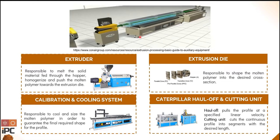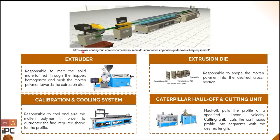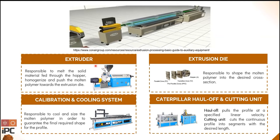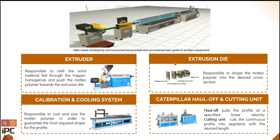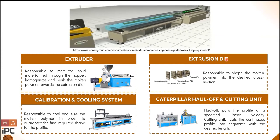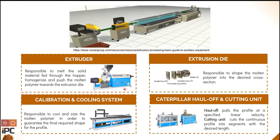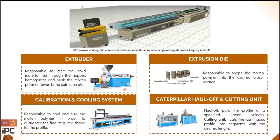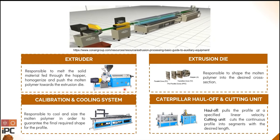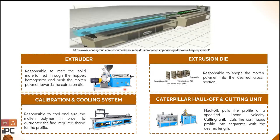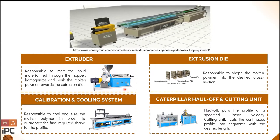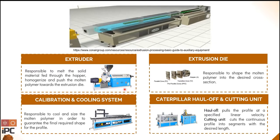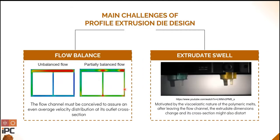A typical profile extrusion line consists of: an extruder, which is responsible for melting the solid material, homogenizing, and pushing the molten polymer towards the extrusion die; an extrusion die, which shapes the molten polymer into the desired cross-section; a calibration and cooling system, which cools and sizes the molten polymer to guarantee the final required shape; a caterpillar haul-off unit, which pulls the profile at a certain linear velocity; and a cutting unit.